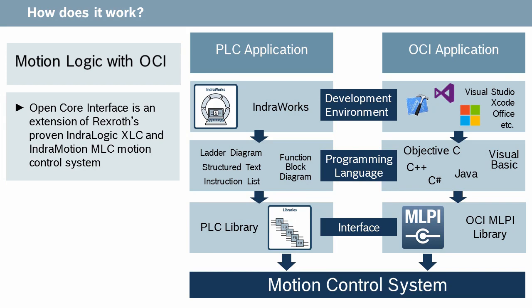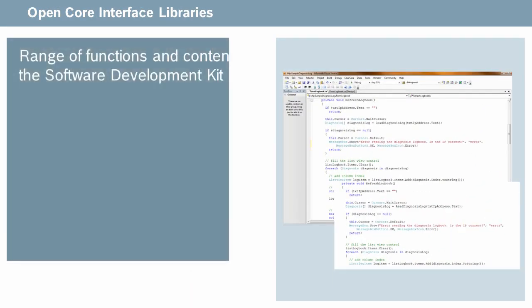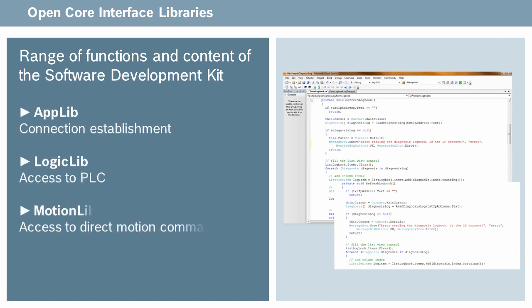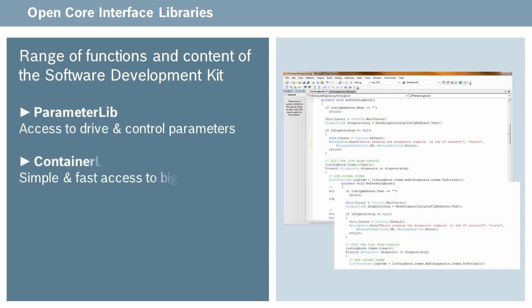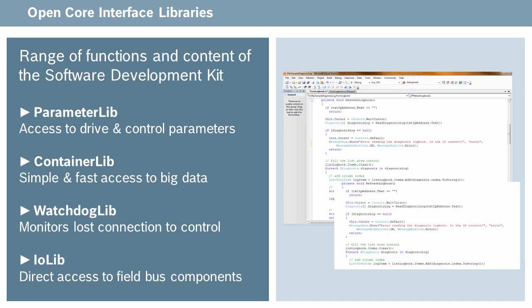This is the feature that allows us to say you don't need a PLC program to gain access to the motion control system — you can just use OpenCore interface. It allows you to show demonstrations where the PLC is turned off and you can still create motion through a different program in a different development environment.